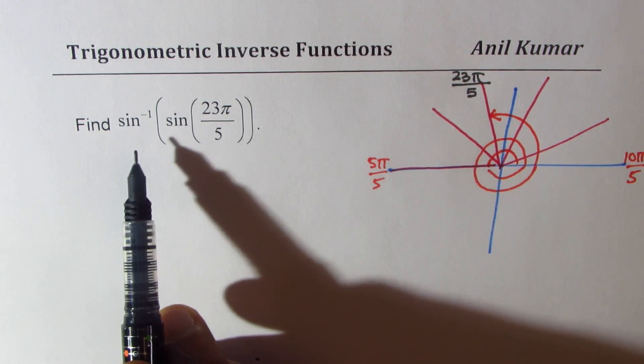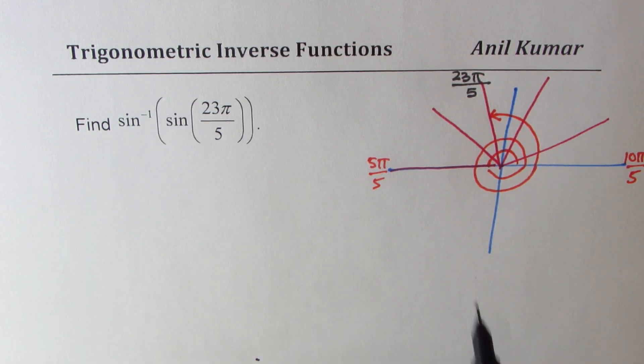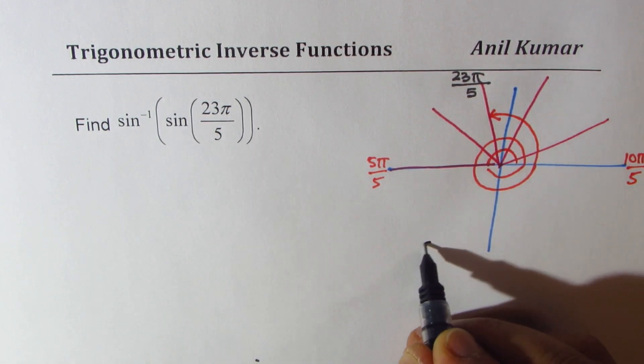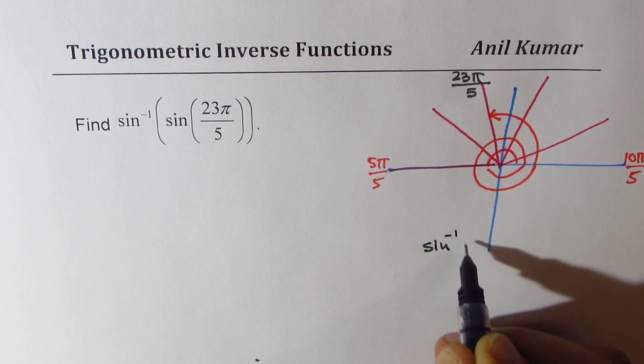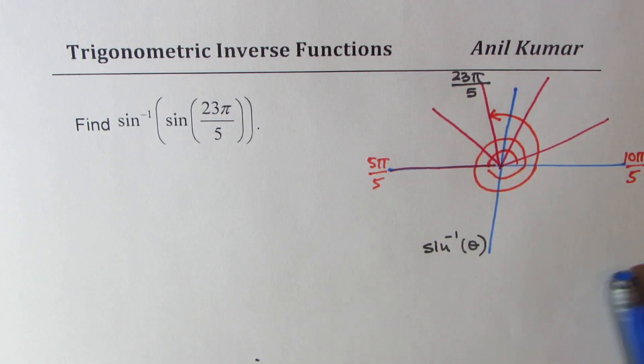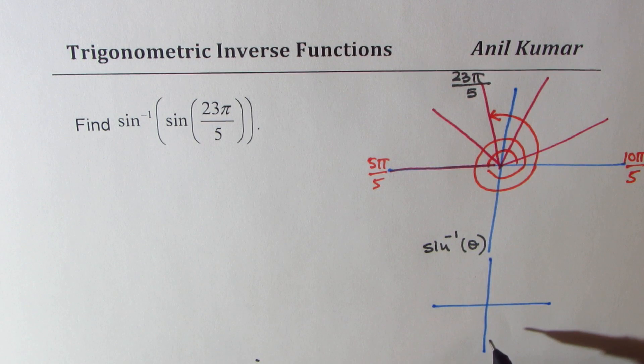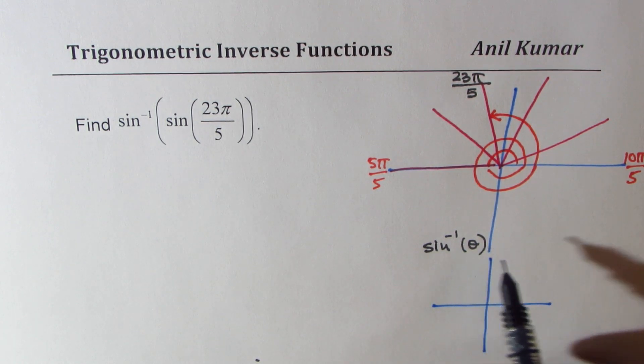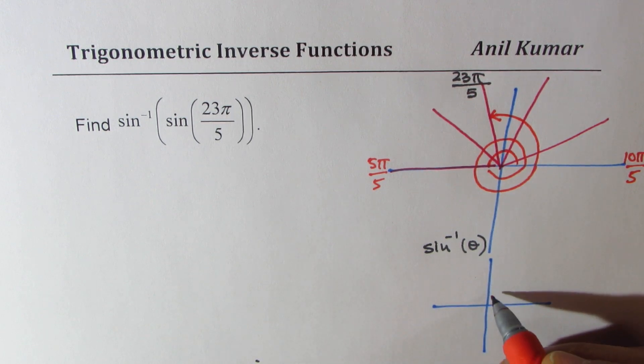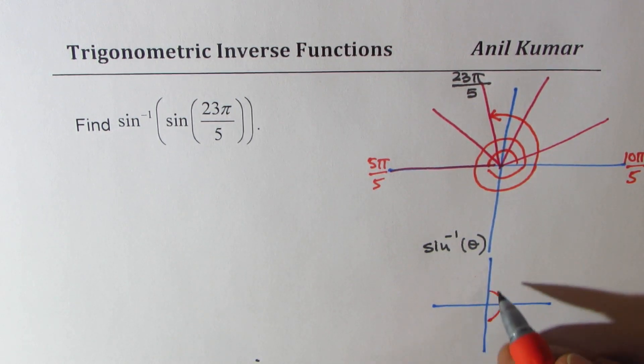Now we have to also understand, when is sine inverse θ valid? So you know that sine inverse θ is valid only in which part? Sine inverse θ is valid in 0 to, I mean this portion, minus π by 2 to π by 2.